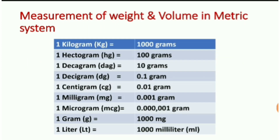Measurement of weight and volume in the metric system: one hectogram (hg) is equal to 100 grams; one decagram (dag) is equal to 10 grams; one decigram (dg) is equal to 0.1 gram; one centigram (cg) is equal to 0.01 gram; one milligram (mg) is equal to 0.001 gram; one microgram (mcg) is equal to 0.001 gram.